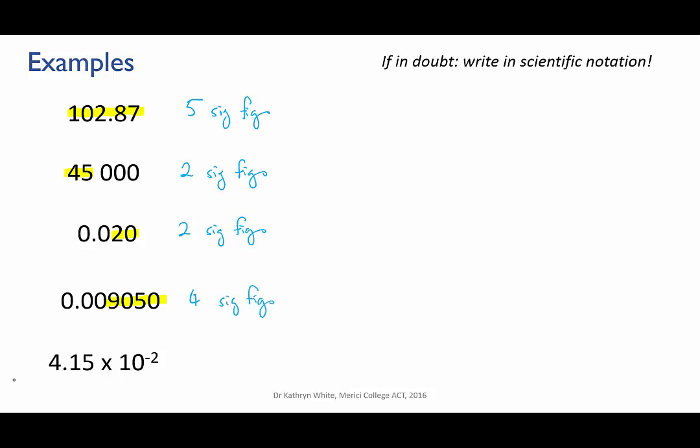Okay, last example. This number is written in scientific notation rather than standard notation. So let's rewrite it in standard notation. It equals 0.0415. And you should be able to see now that it has three sig figs because the first two zeros aren't significant.